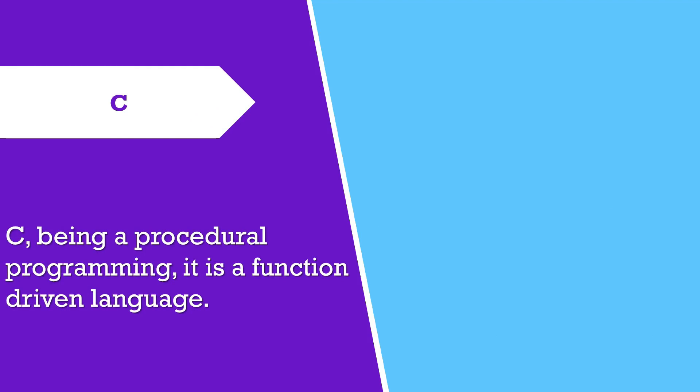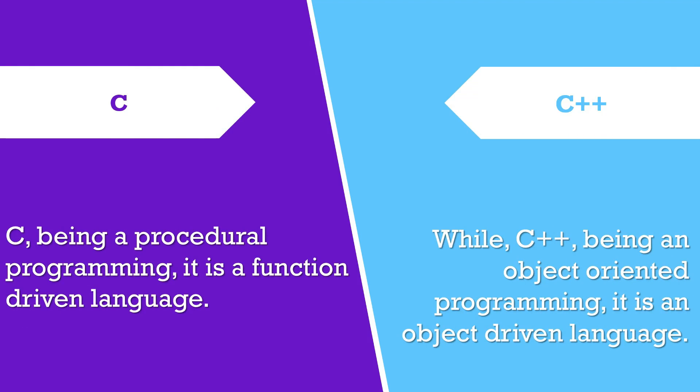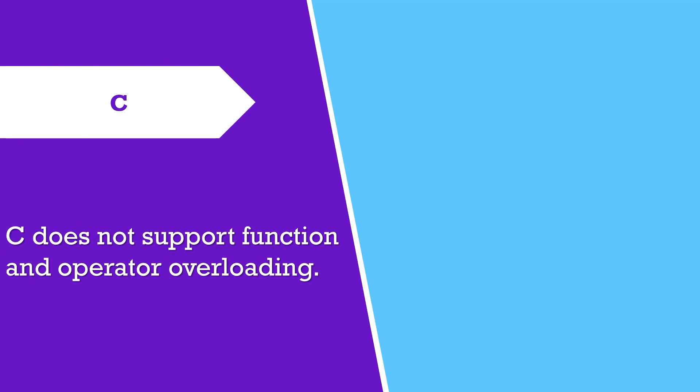C, being a procedural programming language, is function-driven. While C++, being an object-oriented programming language, is object-driven. C does not support function and operator overloading.